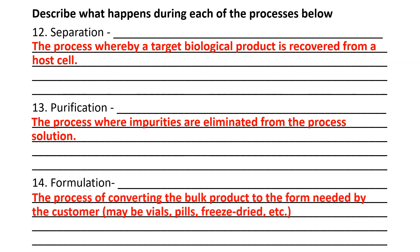Then there is formulation. Eventually, whatever the bulk product is, we need to fill it into the form needed by the customer. The customer may need vials, pills, or it may need to be freeze dried. For example, Advil or Tylenol can be bought in liquid gels, capsules, tablets, or liquid form — there are lots of different forms. Each one is slightly different, and all of these modes need to be handled appropriately. Different countries may require different needs as well.